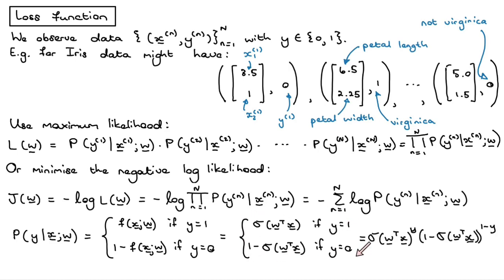Here's a little trick to write this in just one expression without curly braces. If y = 1 (positive class), then 1 minus 1 is zero, and something to the power zero is always one, so that term drops out and we're left with sigmoid(w^T x) — exactly the positive class expression. If y = 0 (negative class), the first term becomes something to the power zero which is one, and the second term is 1 minus sigmoid(w^T x) — exactly the negative class expression. So this compact form correctly handles both cases.